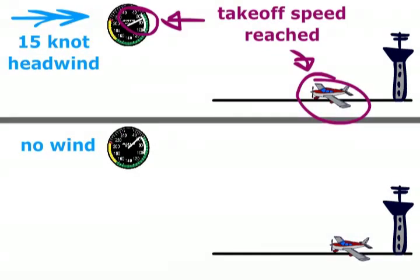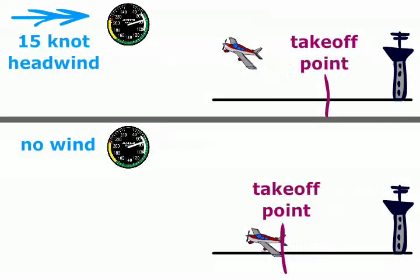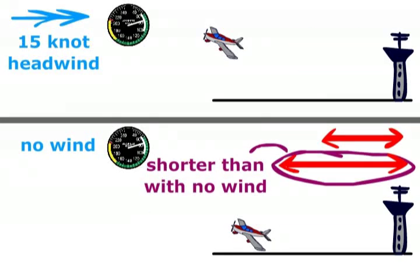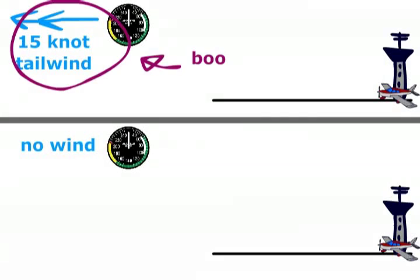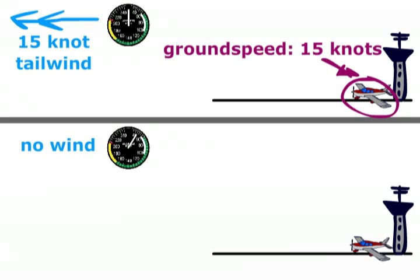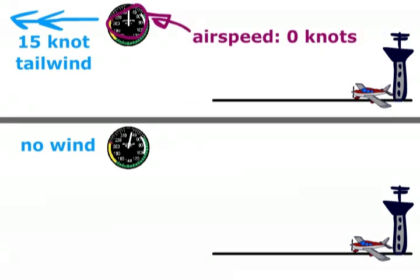Running the takeoff side by side, you can see that the takeoff distance in a headwind is shorter than the no wind scenario. Likewise, a 15 knot tailwind means that you start off with a 15 knot disadvantage, and you need to have a ground speed of 15 knots before your airspeed is zero. This increases the distance required to take off when compared to the no wind aircraft.